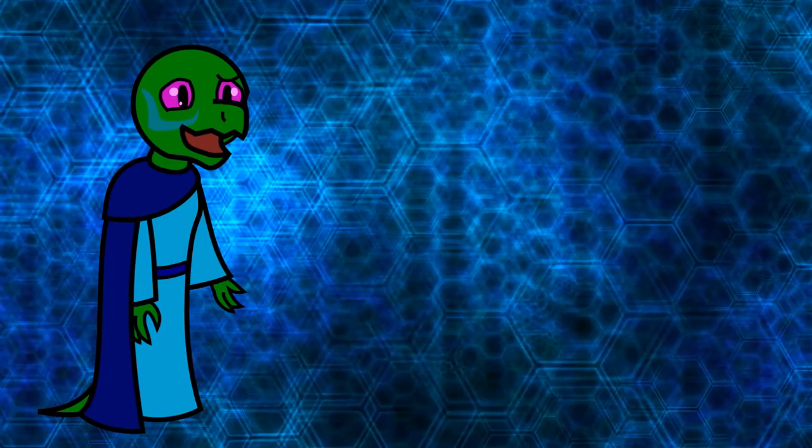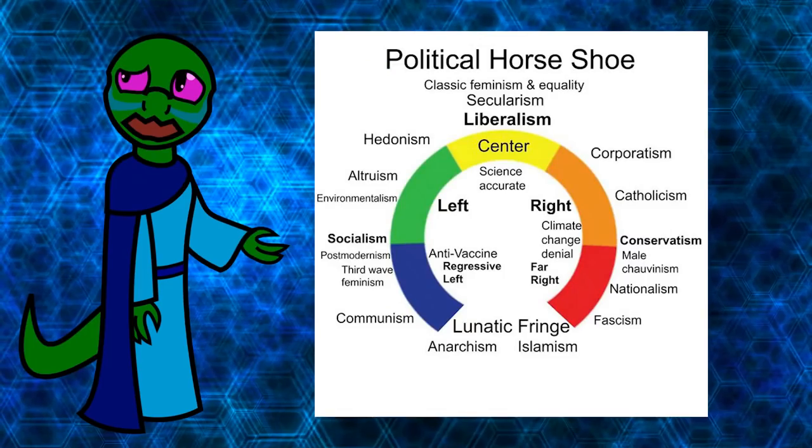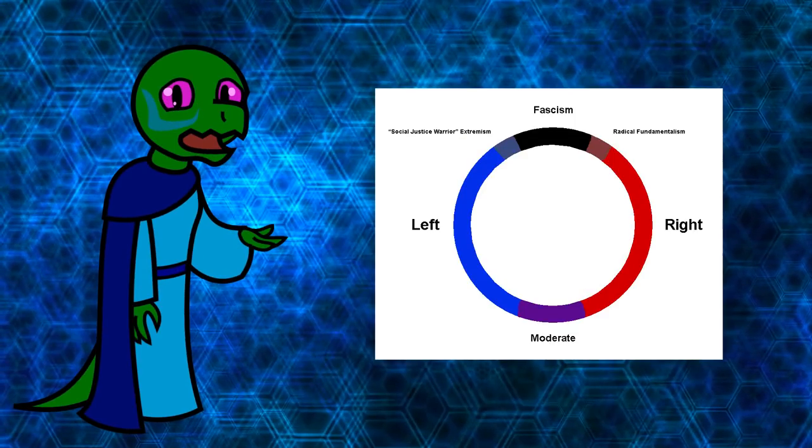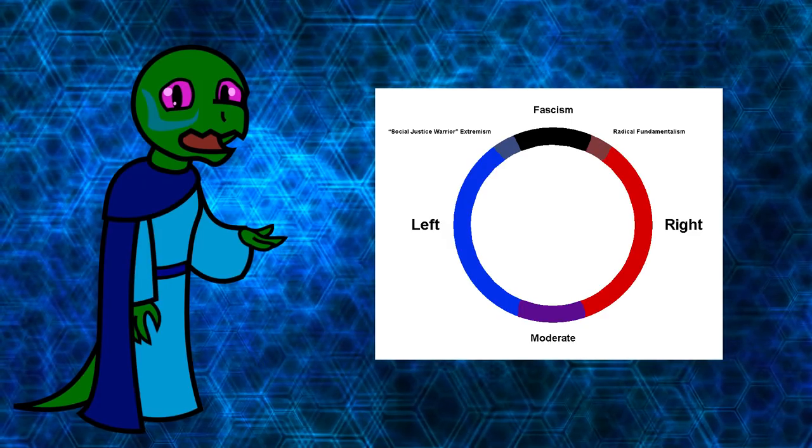People have attempted to reconcile these clear inconsistencies by inventing things like the political circle or horseshoe theory. The idea is that the further you go towards vaguely defined extreme, the more closely these ideas resemble each other, which makes sense.